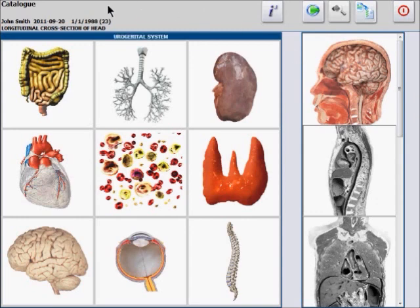where the scanning can be done. First is the digestive system, the respiratory system, urogenital system, cardiovascular system, blood and lymph, endocrine system, nervous system, sensory system, and the locomotor system.